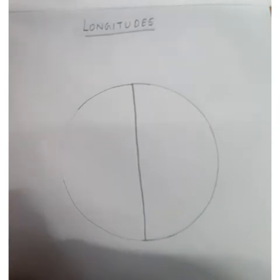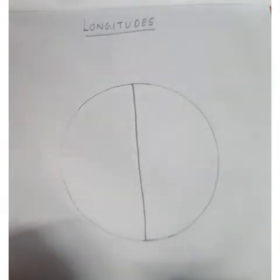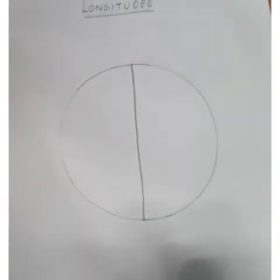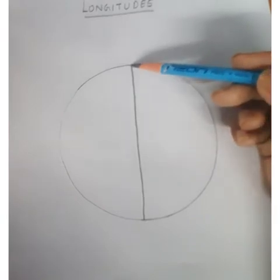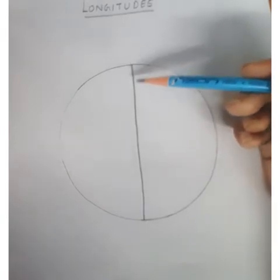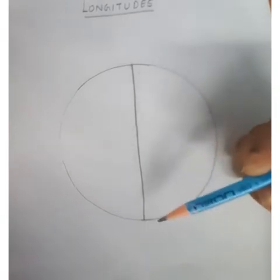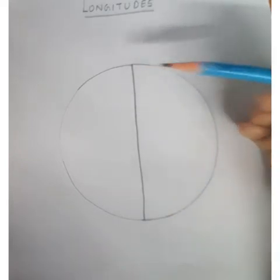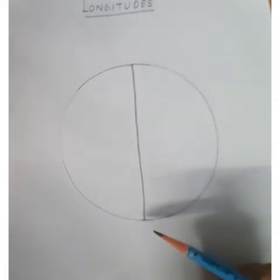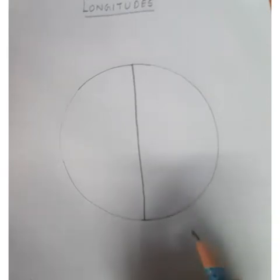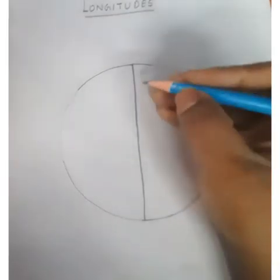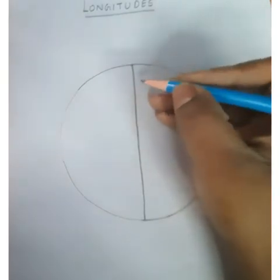Now, draw a circle. Then with the help of a scale, draw a straight line like this — a straight line from the north pole to the south pole.